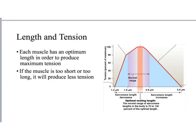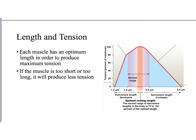Let's begin looking at how different properties of the muscle can produce more or less tension. Think of tension as the strength of contraction, or the ability to do work. Tension can be increased by finding the optimum length of a muscle before contraction. If you look at the graph on the right, there is a particular range of muscle length which produces the greatest amount of tension - in this pink area. If the length of the muscle before contraction begins falls in this red area, then we will have maximum tension produced.